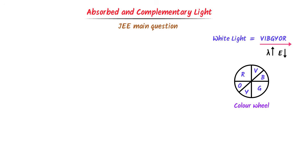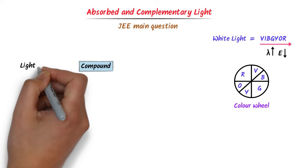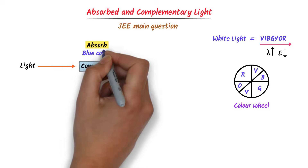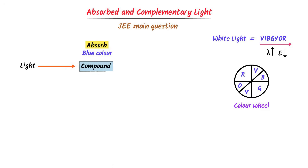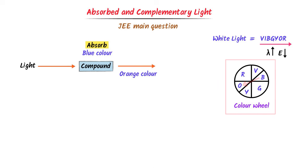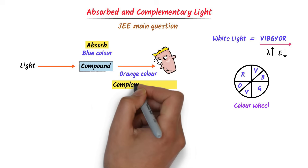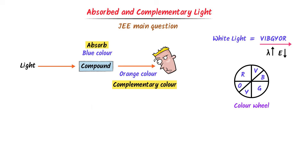For example, consider a coordination compound. Let light fall on it. It absorbs blue color from the light. On the color wheel, the color opposite to blue is orange. This coordination compound radiates orange color and our eyes will see it as orange colored. This orange color is the complementary color. Thus, the absorbed color is what a coordination compound absorbs from light, while the complementary color is what our eyes see.